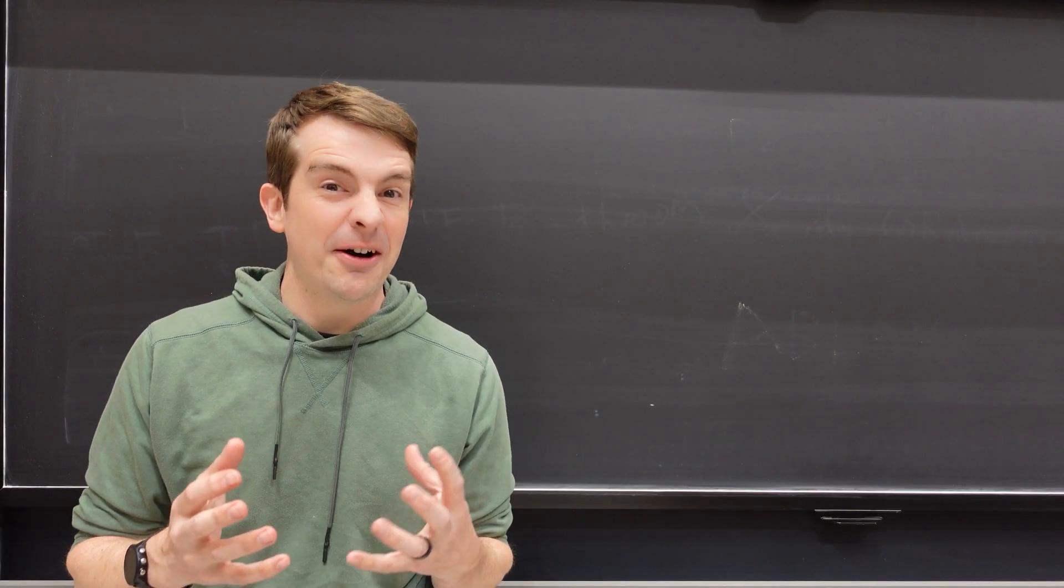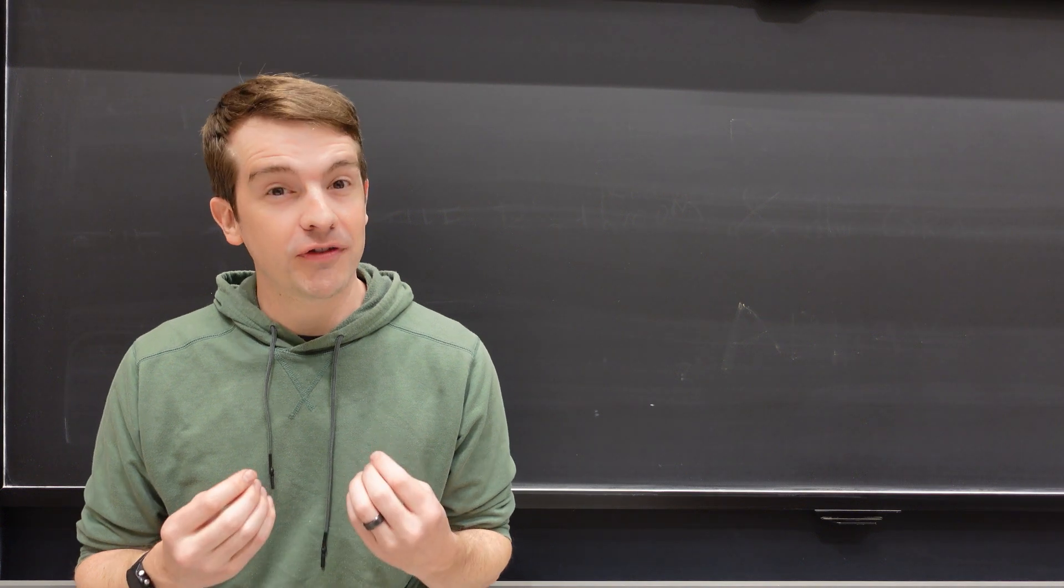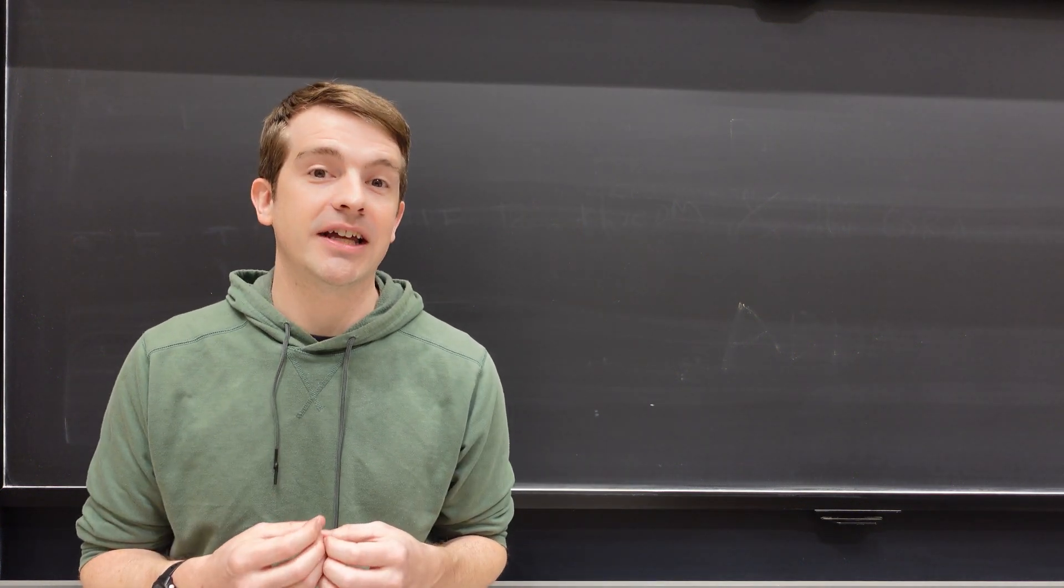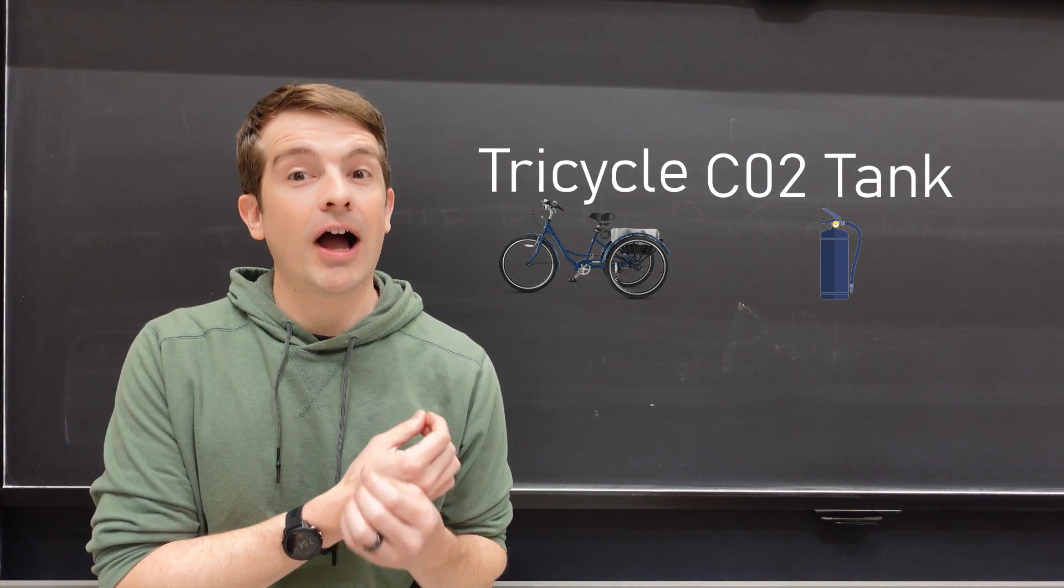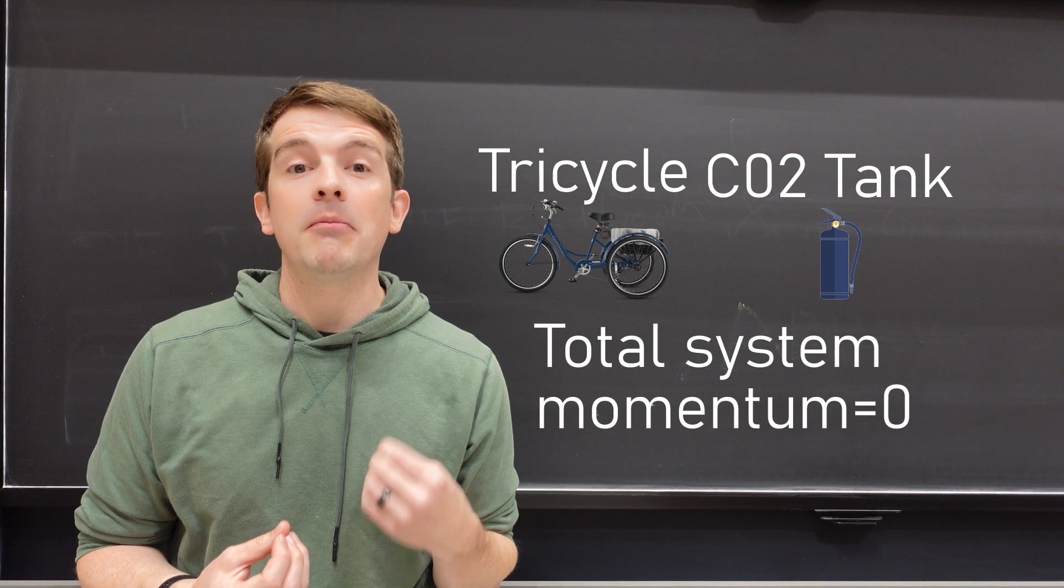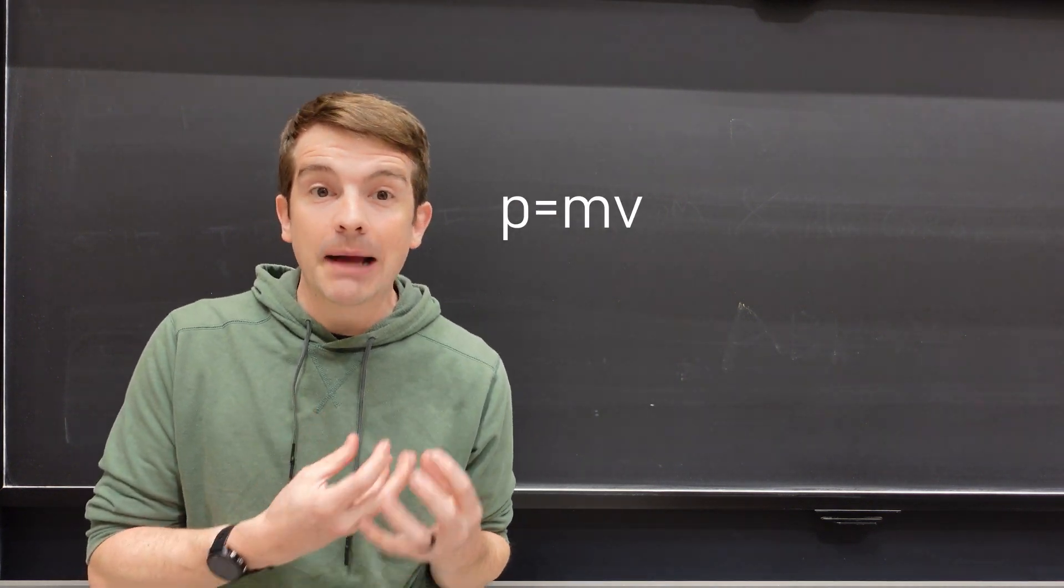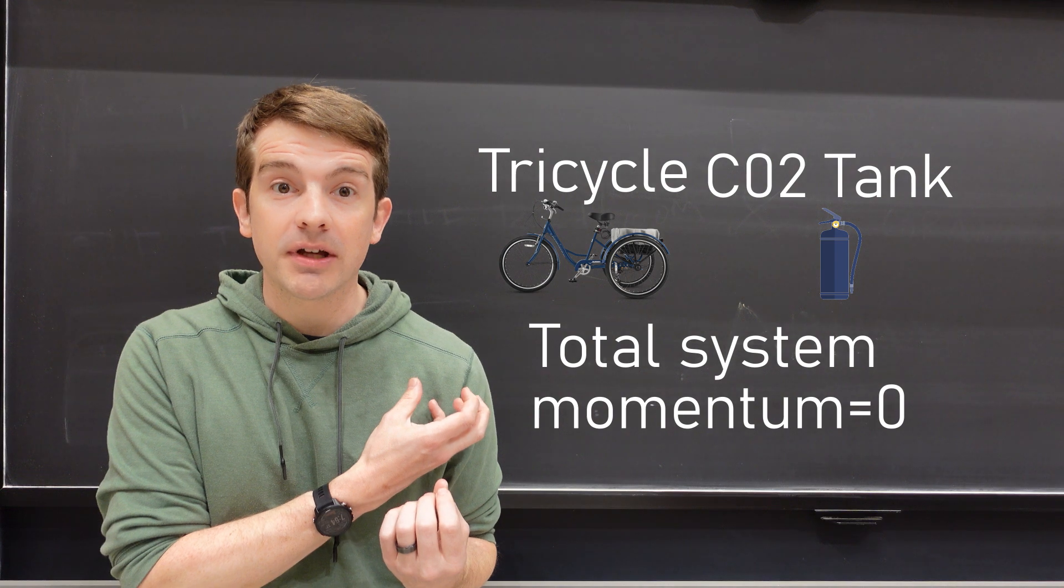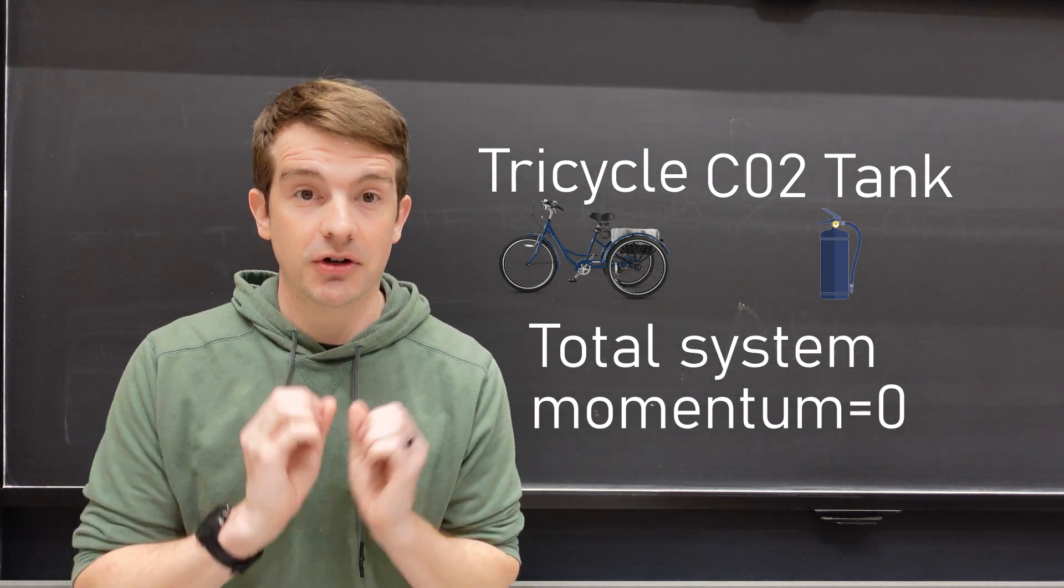This loud and kind of cool looking rocket tricycle works off something called conservation of momentum. Actually, I have a tricycle and I have a tank and they both have mass, but they're both not moving, so they have inertia, which is what mass is, but they don't have momentum. And momentum is defined as mass times velocity, so the system, and I define my system as both objects, has a momentum of zero.